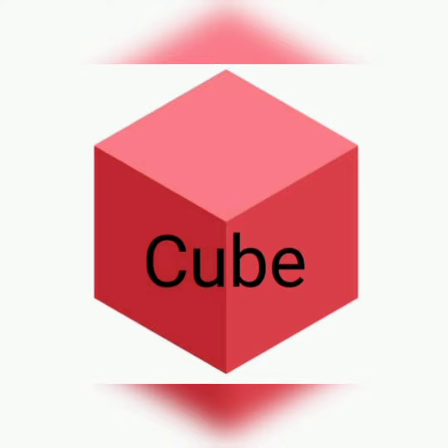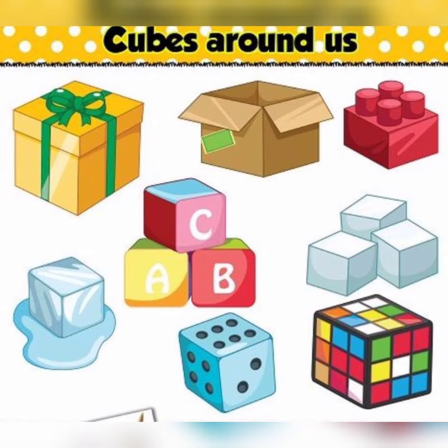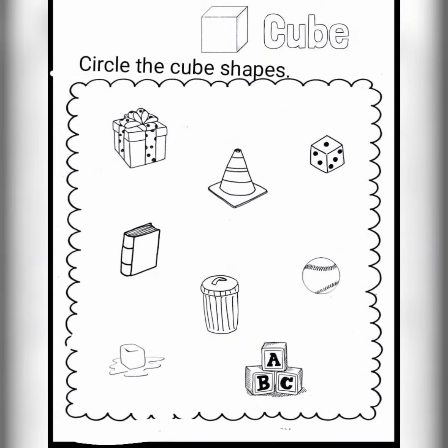Now this is our second shape, which is a cube. A cube can appear in different pictures — like a box, a block, an ice cube, or a dice. We have already studied this, so what you have to do is circle the cube-shaped things, like a dice or a block.